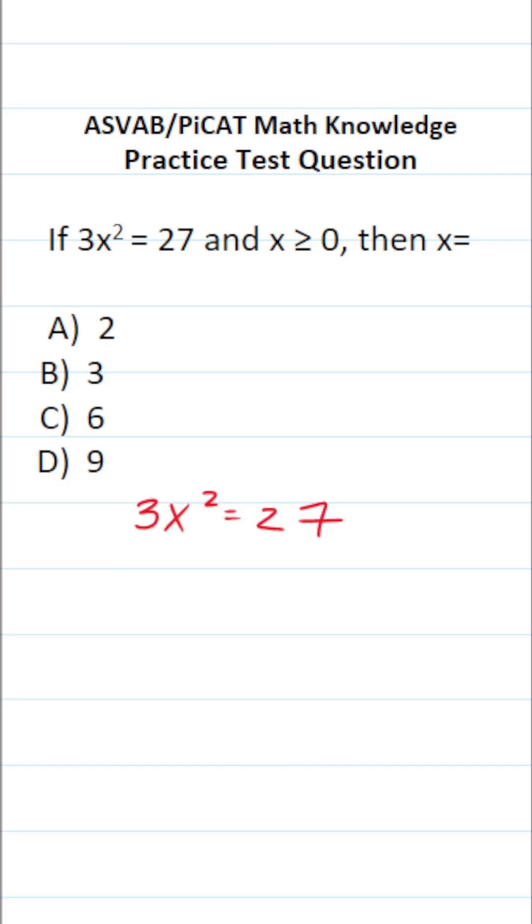In this case, the first thing I'm going to do is divide both sides of the equation by 3. In doing so, this becomes x squared equals 27 divided by 3 is 9.